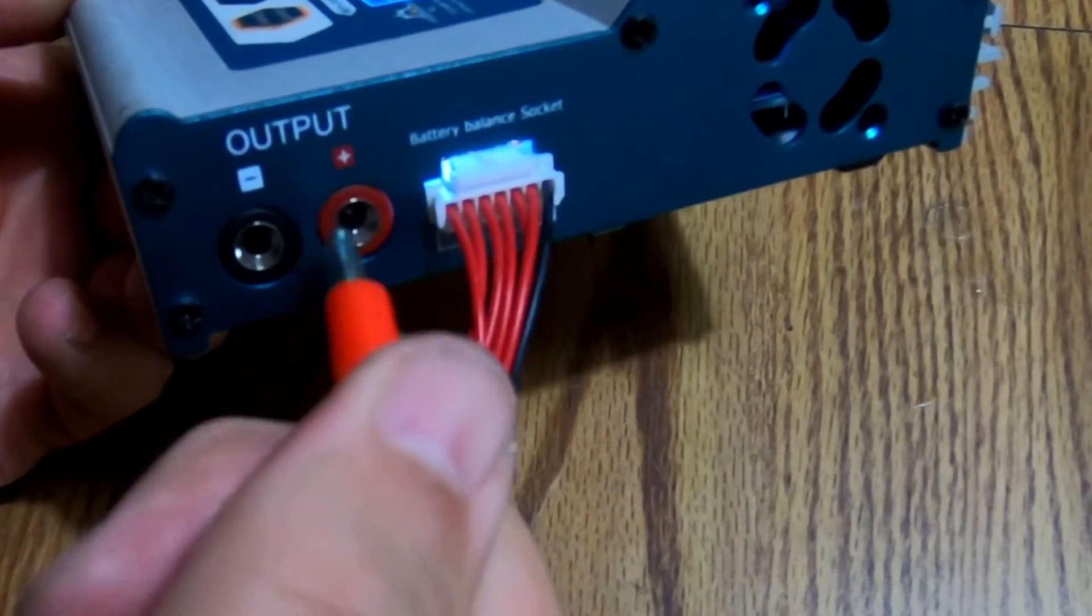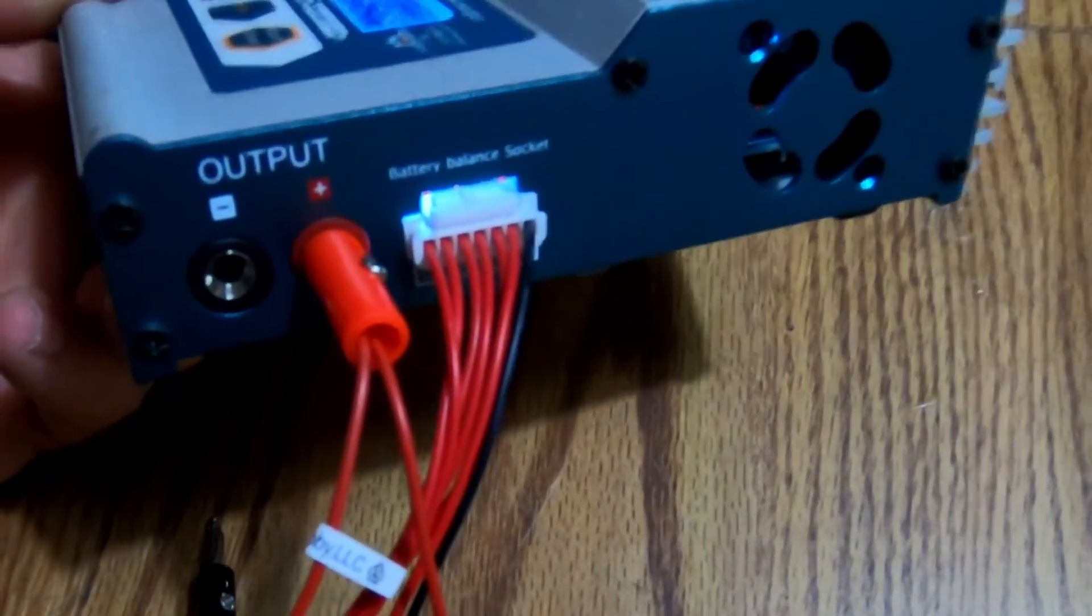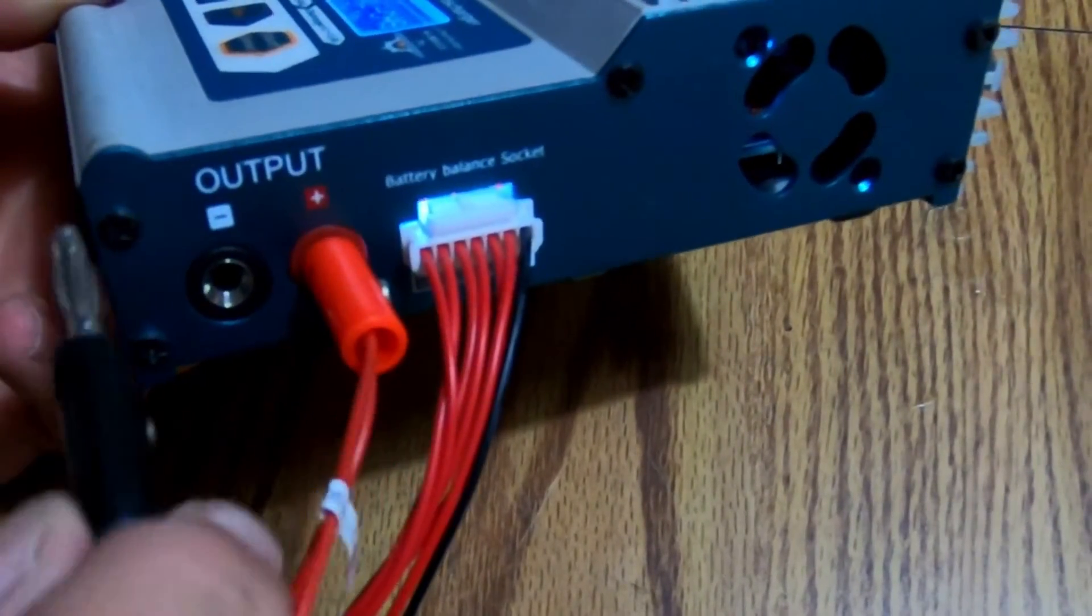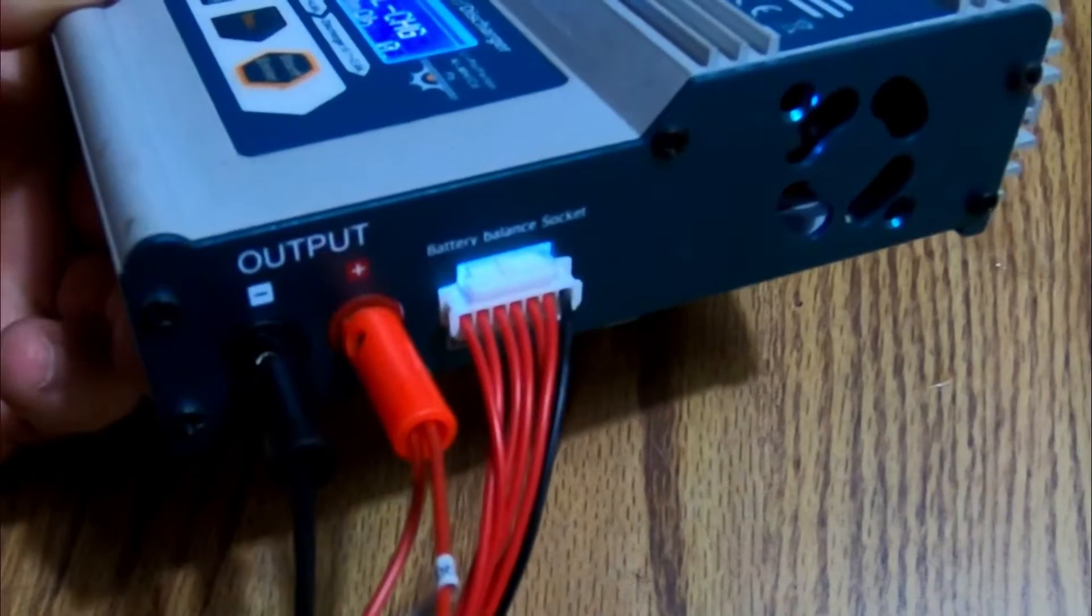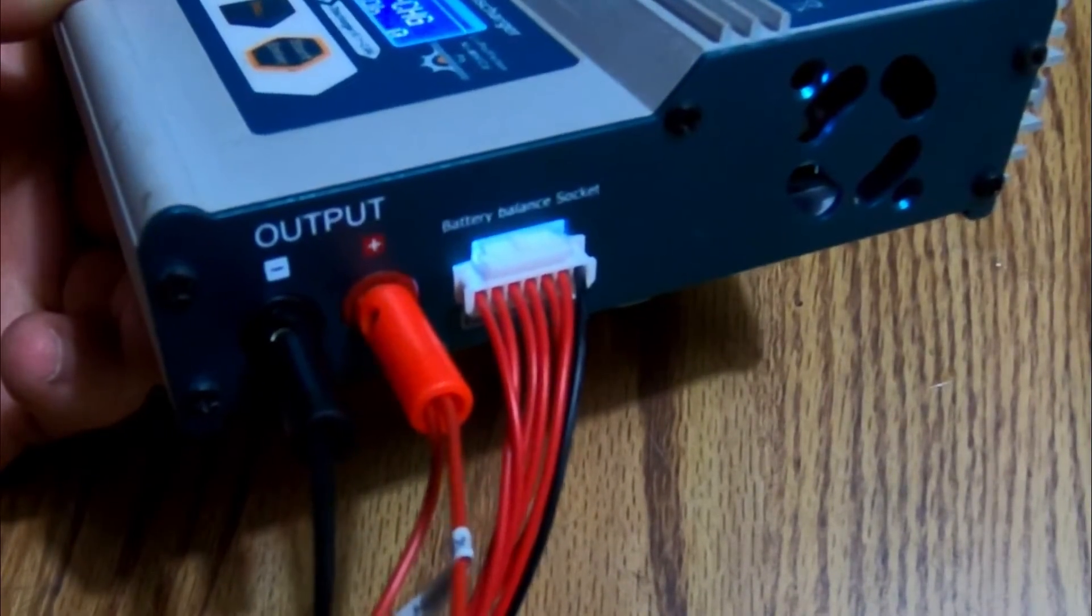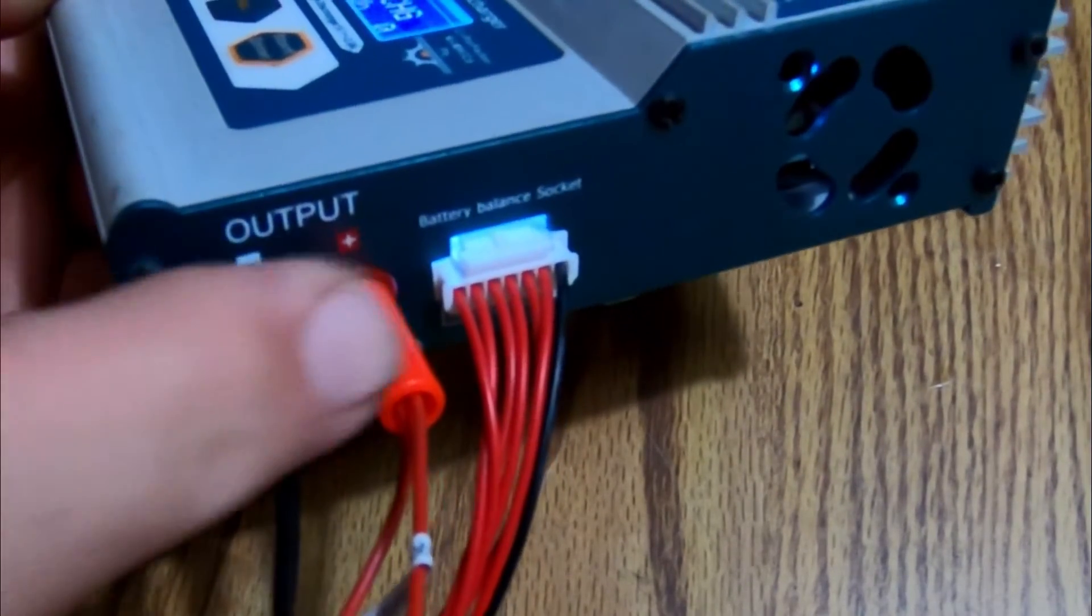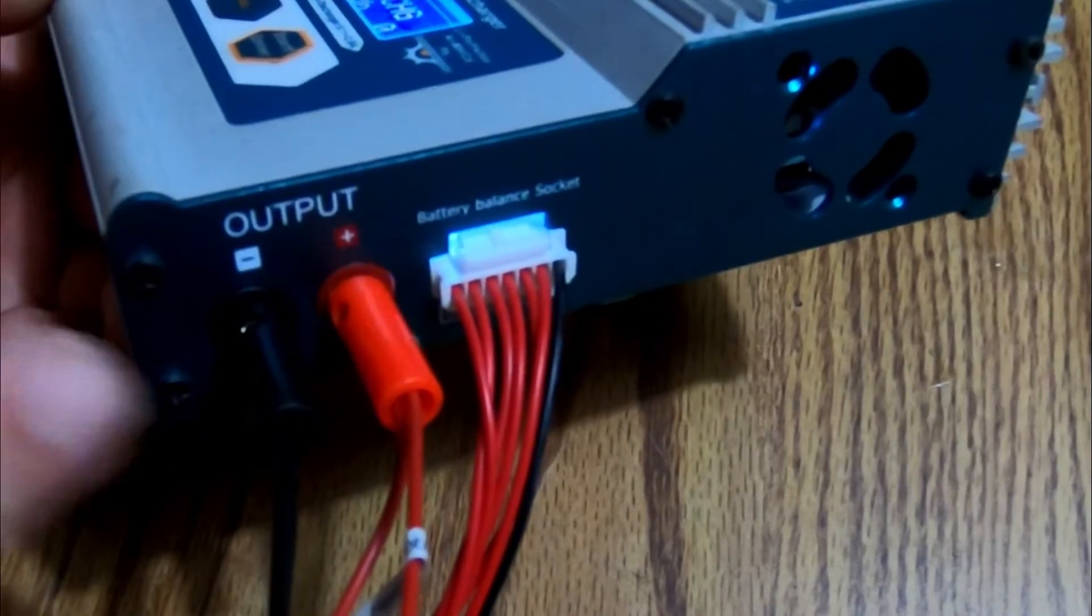So you're going to plug the red side into the red side of the adapter here. And then you're going to plug in the black to the black. I'm showing you how to plug this into my charger. Your charger may be a little bit different, but most of the LiPo battery chargers take the banana clips that have a positive and negative.